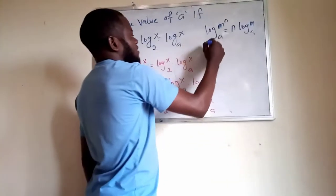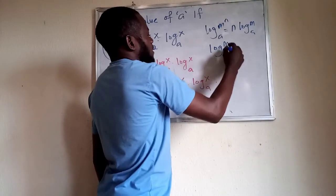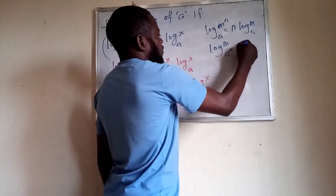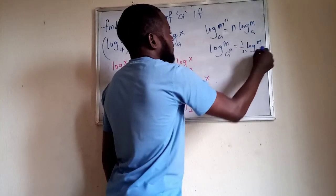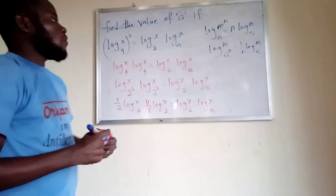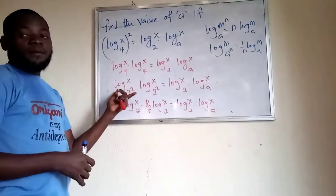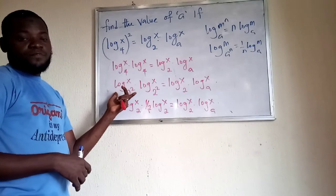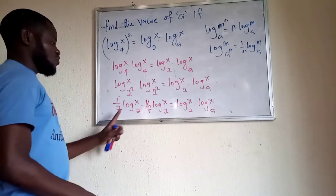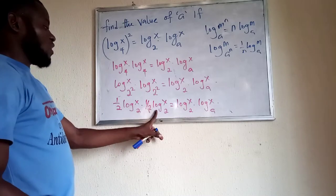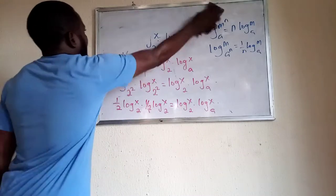But if the base is raised to the power, like log m in base a to the power of n, this becomes 1 over n times log m in base a. We have a similar situation here. Since we have log x in base 2 appearing on both sides, we can now proceed.